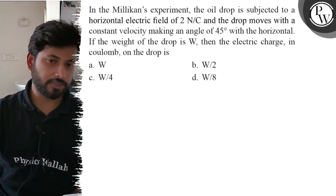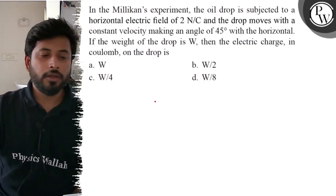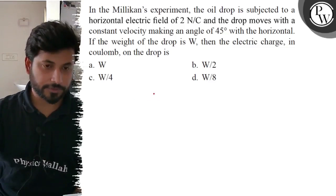If the weight of the drop is W, then the electric charge in coulombs on the drop is: option A, W; option B, W/2; option C, W/4; option D, W/8.